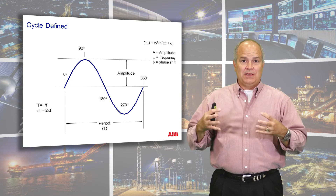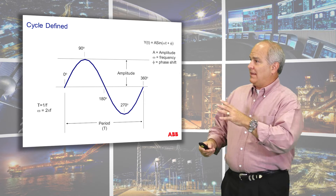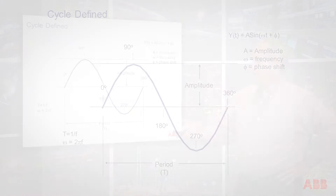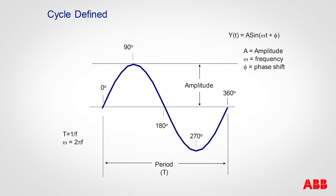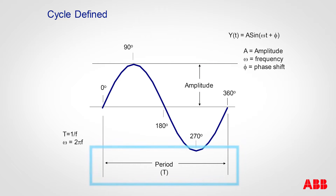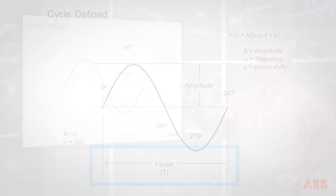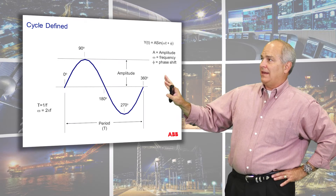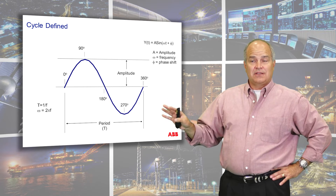In order to first understand that, let's go through a sine wave. We have a sine wave here: 0, 90, 180, 270, 360 degrees. We have an amplitude, which is really the average to the peak — sometimes they call that peak-to-peak amplitude. And then you have your period. So you'll see periods and frequencies, and we're going to discuss that here in just a little bit.